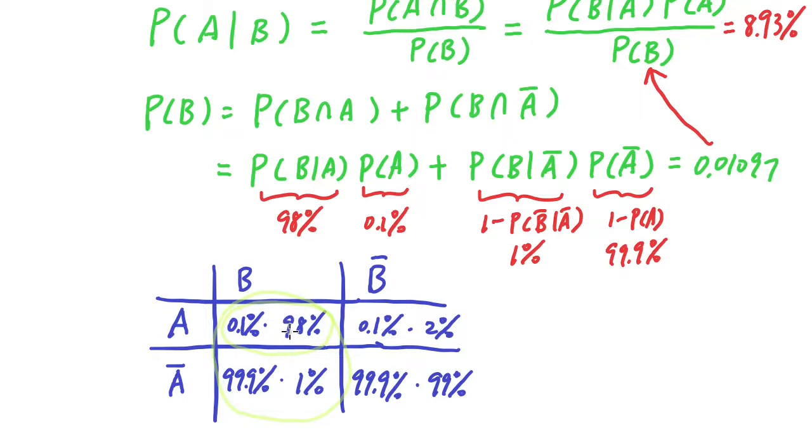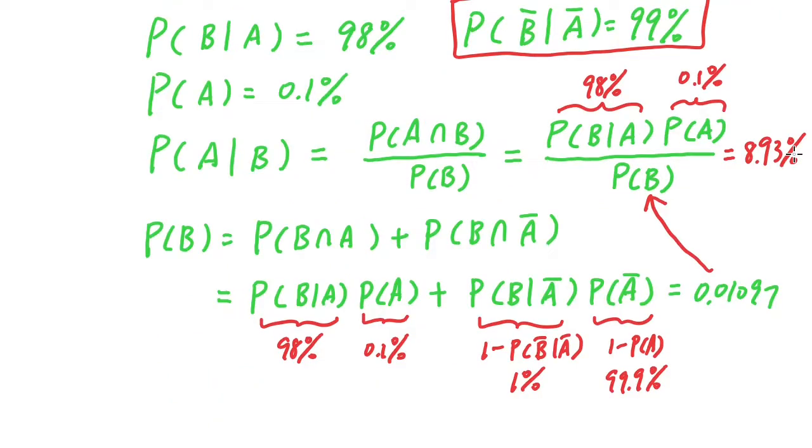So hopefully this provides a better view for you to really see the probability in this table. This is interesting, because even though you think the test is pretty accurate at 99 and 98 percent, when someone is tested positive, you are actually not quite sure that they really get the disease. You only believe it at 8.93 percent. Thank you.